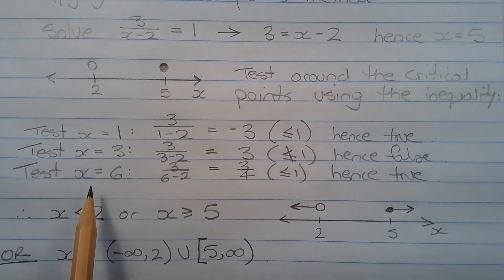Testing x equals 6: 3 over 6 minus 2 equals 3 over 4, which is less than or equal to 1, hence true.